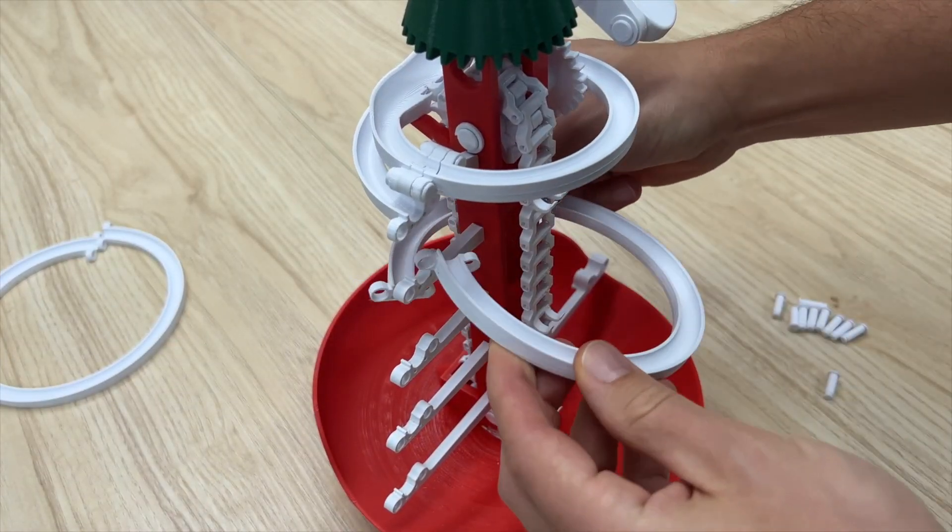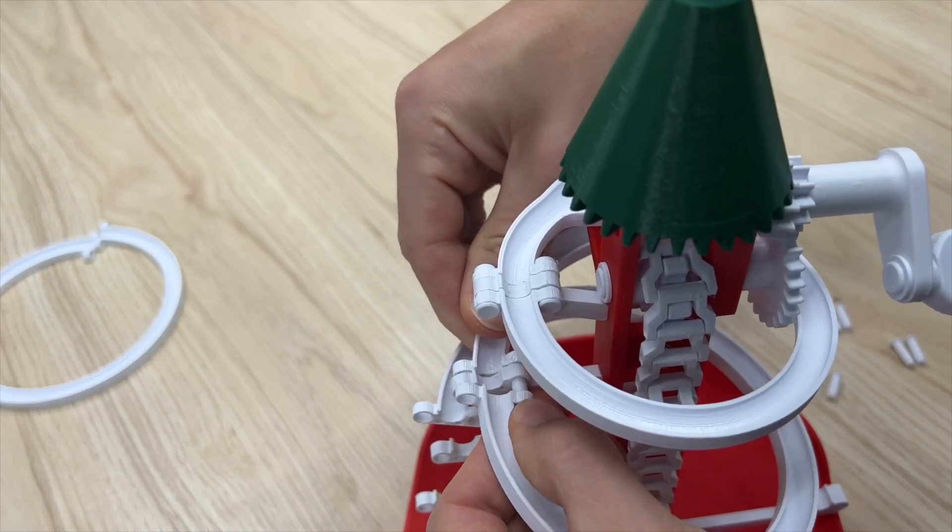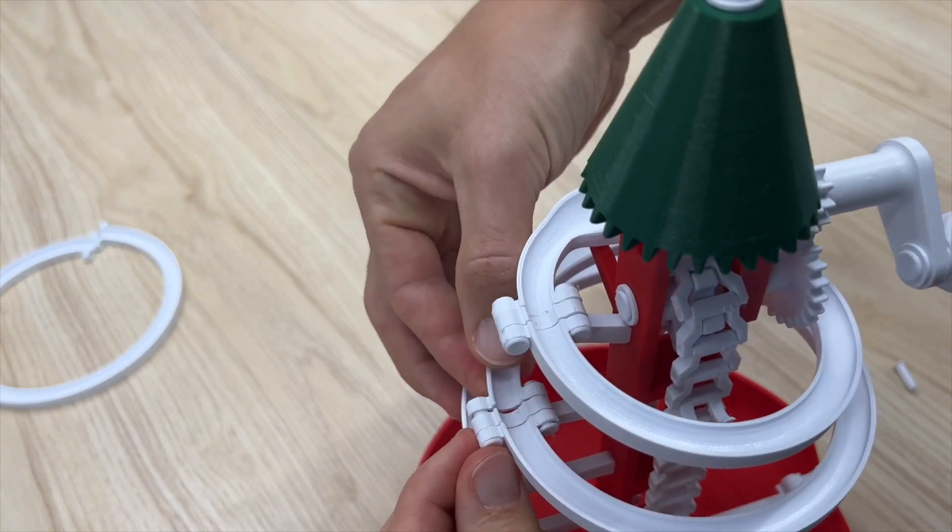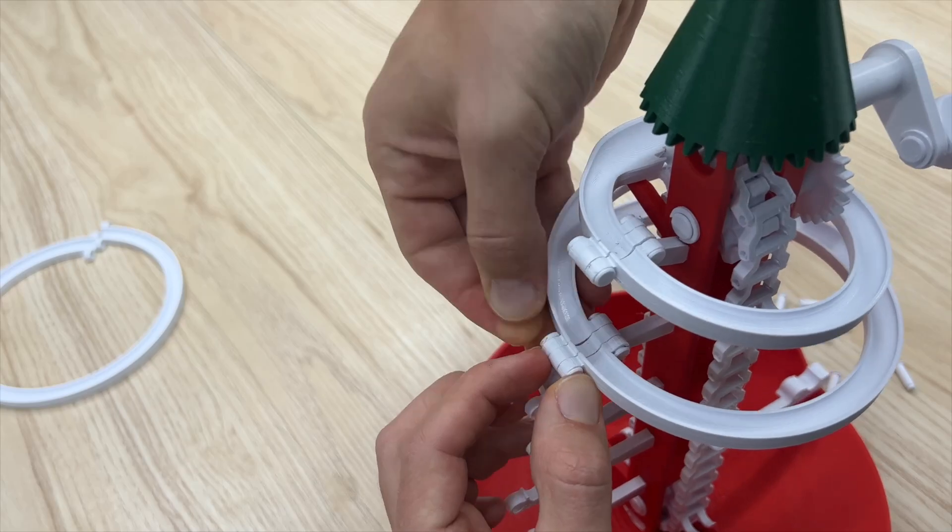Then you're just going to repeat this process the whole way down, going from the smallest to the biggest. Twist the track into place, two pins, c-clamp.